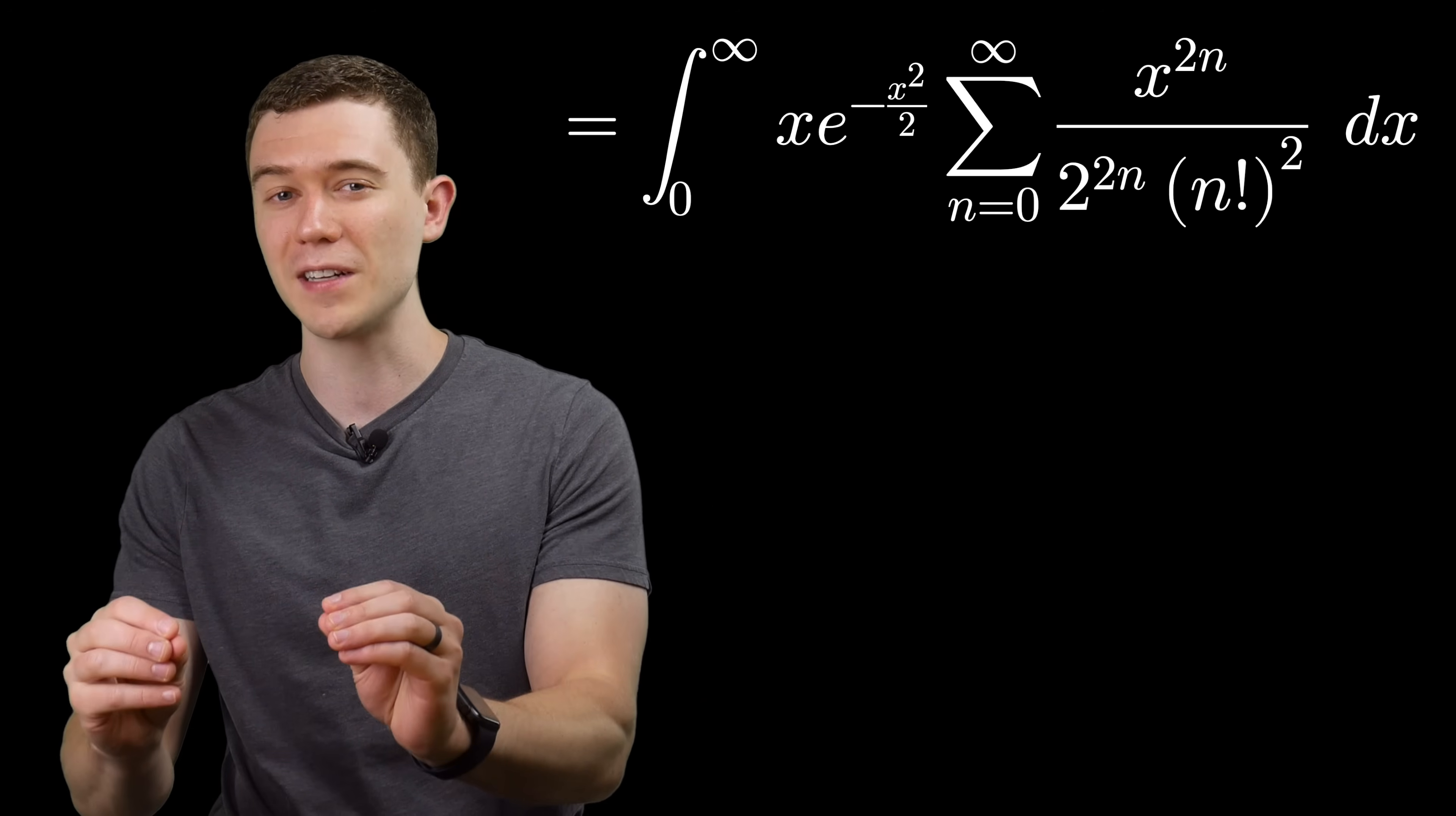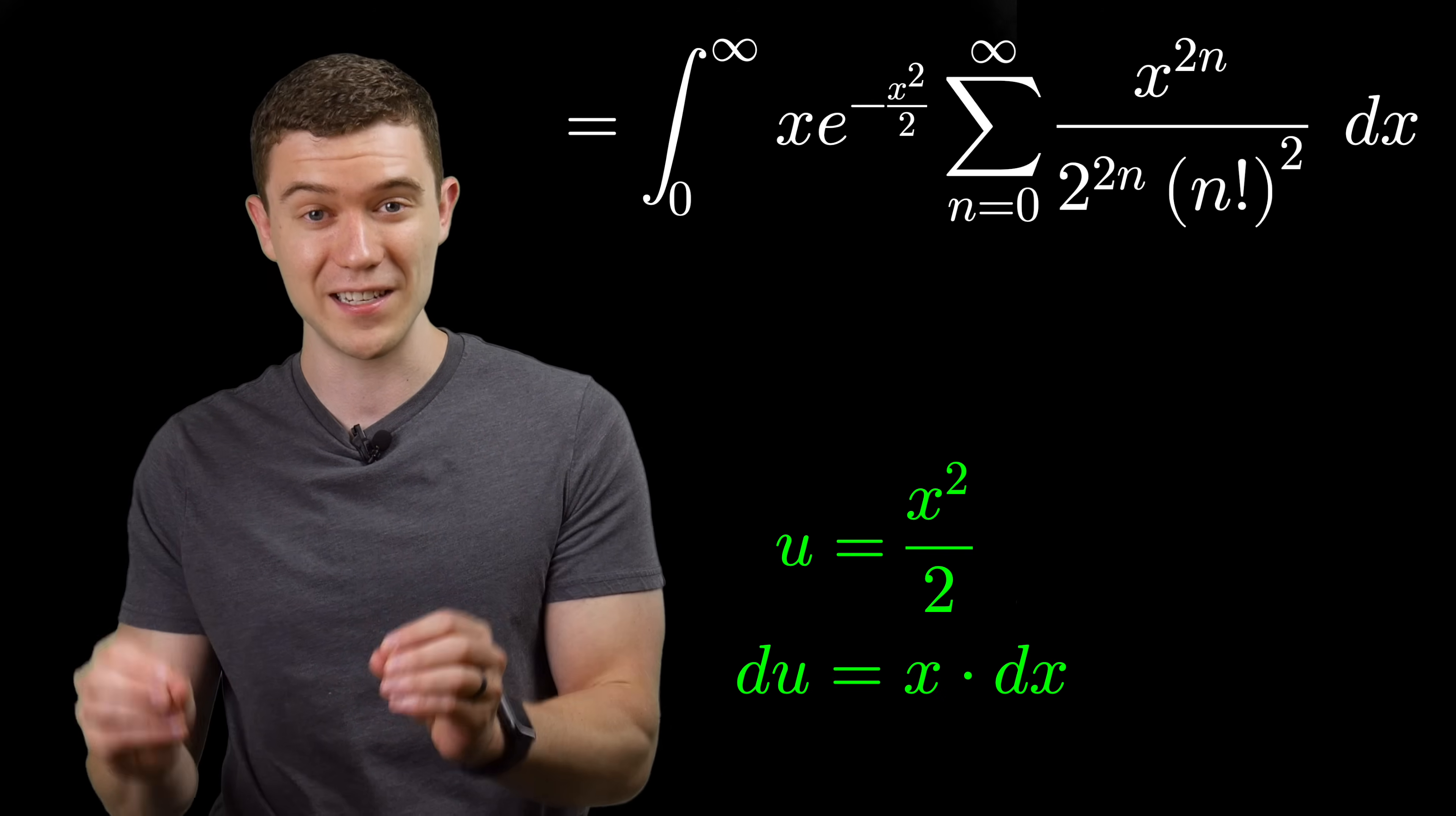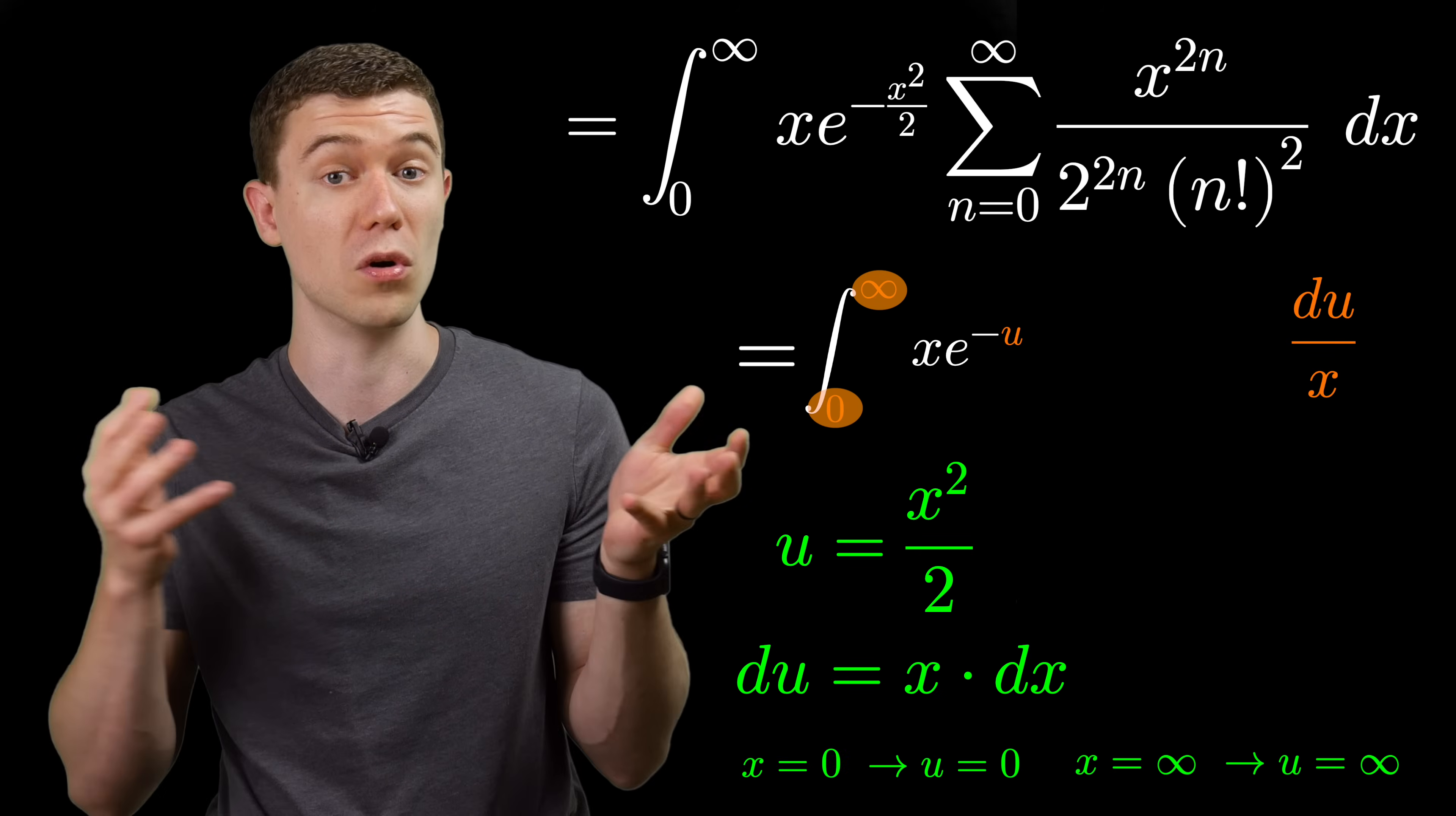I think the most direct approach is to use a u substitution. That x times e to the minus x squared over 2 is just begging to use a substitution, so let's let u be x squared over 2. That'll make du equal x dx, and we can substitute that into the integrand. We'll just have e to the minus u. This works out very nicely because the x dx just cancels to make du, and if we look at those limits of integration from 0 to infinity, well, those are going to be the exact same limits of integration for du.